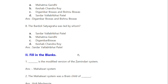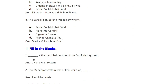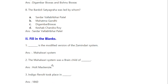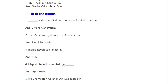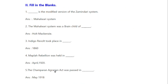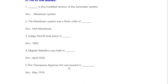Fill in the blanks. Dash is the modified version of the Zamindari System. Mahalwari System was a brainchild of Holt Mackenzie. The Indigo Revolt took place in 1860. Mahalwari Rebellion was held in April 1920. The Champaran Agrarian Act was passed in May 1918.